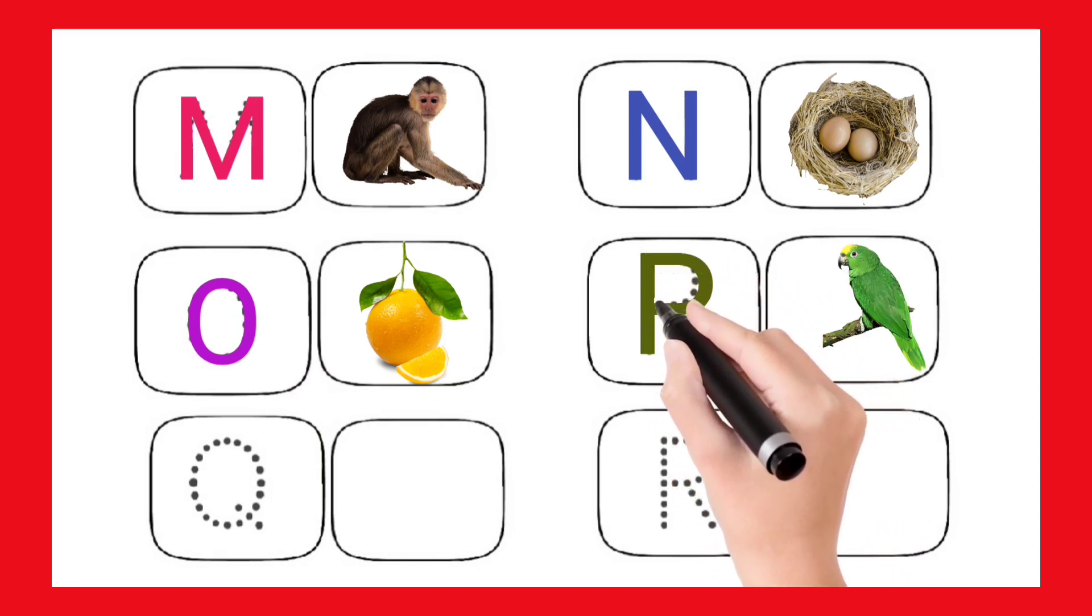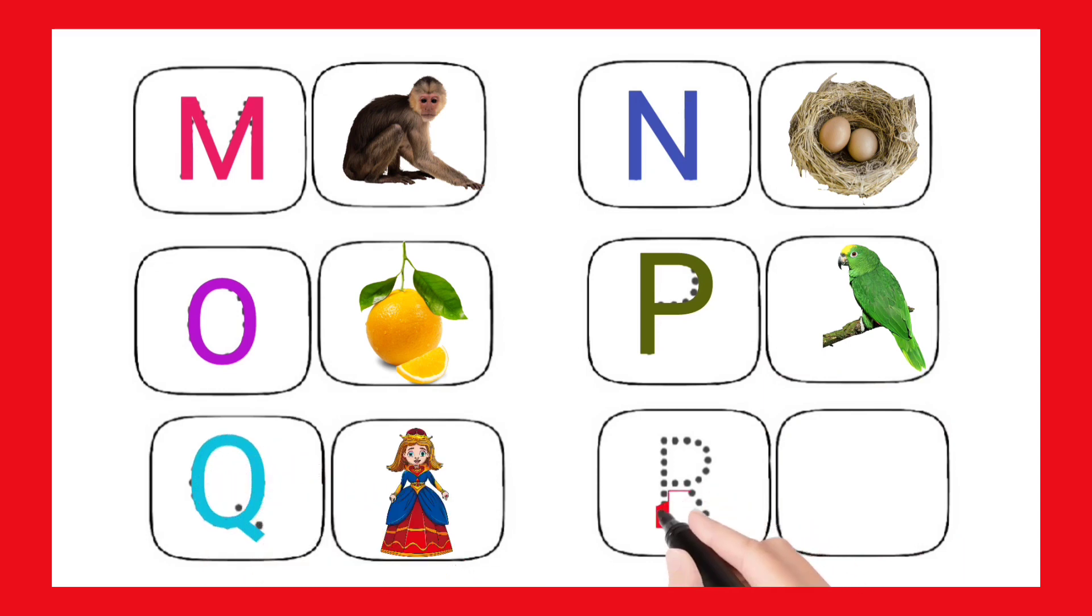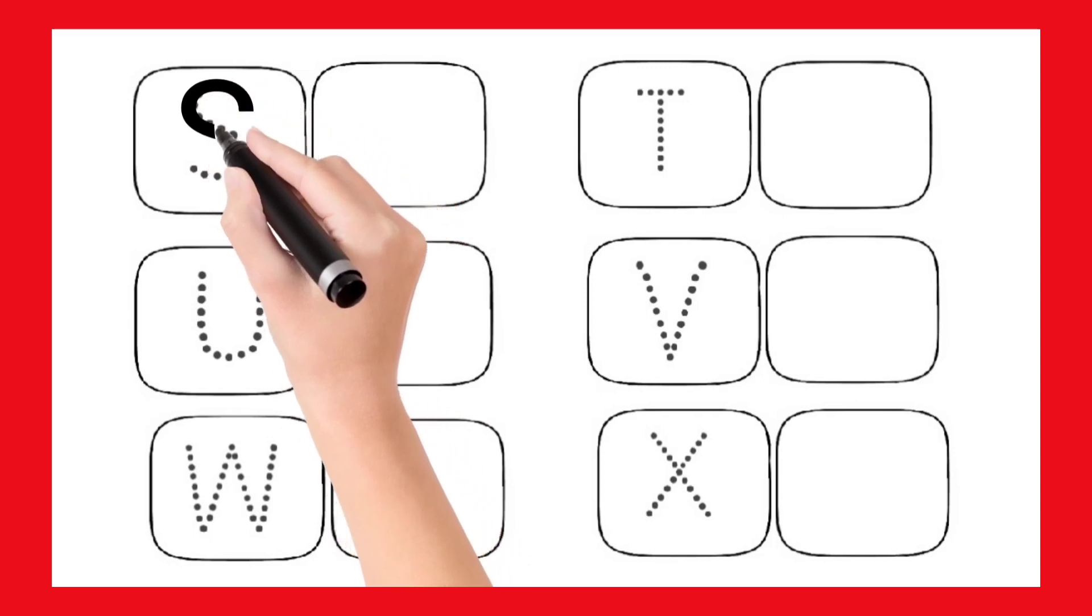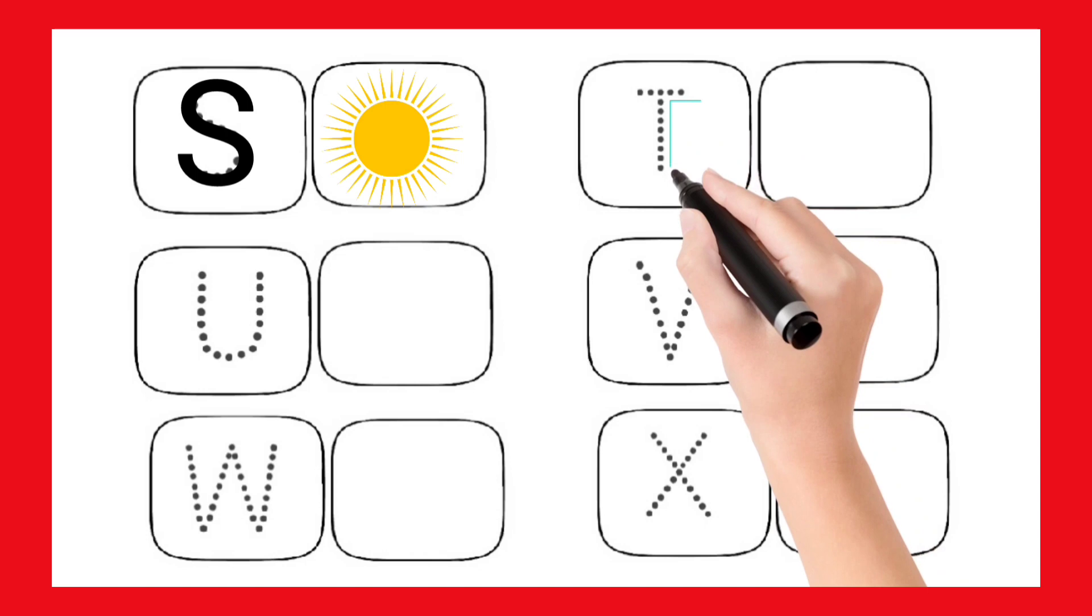P for Parrot. Q. Q for Queen. R. R for Rat. S. S. S. S for Sun. T. T.